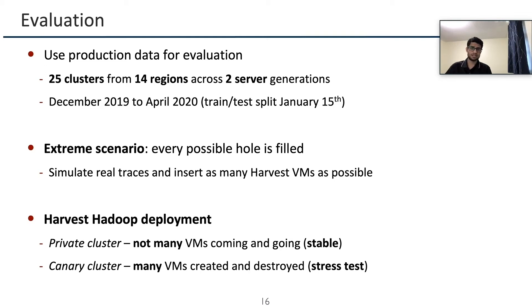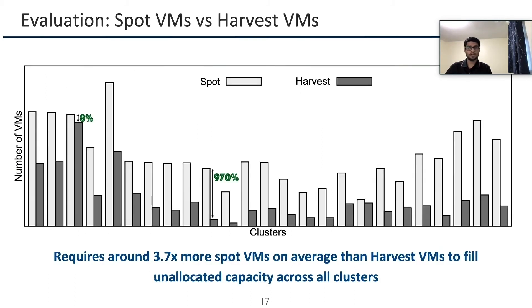In stress testing, we keep creating many more VMs to check Harvest VM stability. We begin by assessing the benefits of Harvest VMs over spot VMs in terms of the number of VMs required to fill the same amount of unallocated capacity. The X-axis shows different clusters and the Y-axis shows number of VMs. We can clearly see that many more spot VMs are required to fill the same unallocated capacity compared to fewer Harvest VMs. The key result is that it requires 3.7x more spot VMs on average than Harvest VMs to fill the unallocated capacity across all clusters.